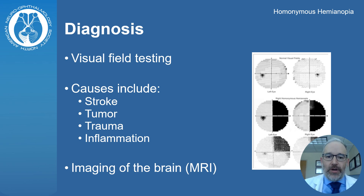Some of the causes of homonymous hemianopia include stroke, brain tumors, brain trauma, and sometimes brain inflammatory diseases.